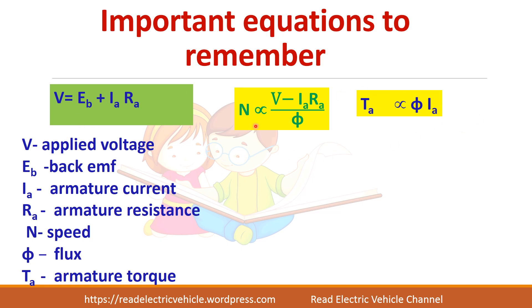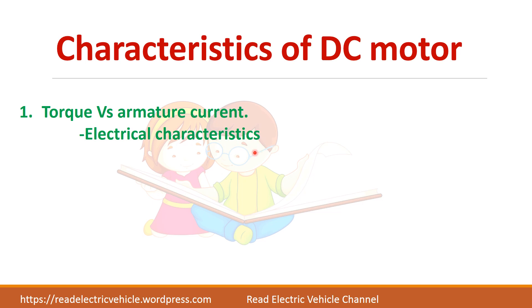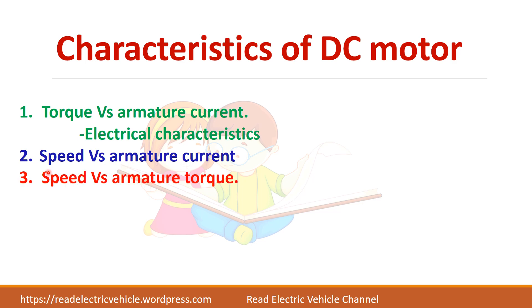There are three important characteristics. The first is torque versus armature current, which is the electrical characteristic. The second is speed versus armature current. The third is speed versus armature torque, which is derived from the first two and is also called the mechanical characteristic.